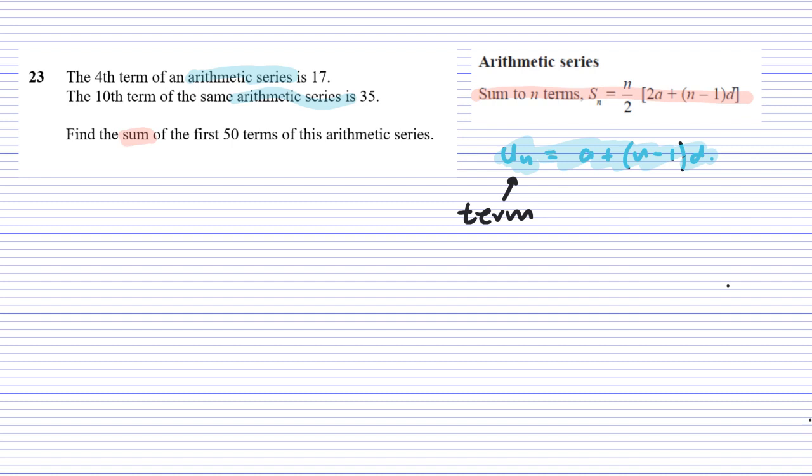So we can see from the question that the fourth term, U4, is equal to 17. That means that 17 is equal to A, which we don't know, plus N minus 1. We know N is 4, so that's 4 minus 1 times D.